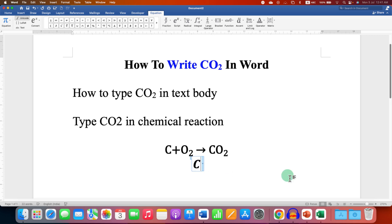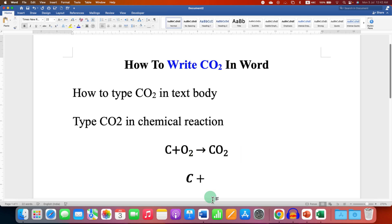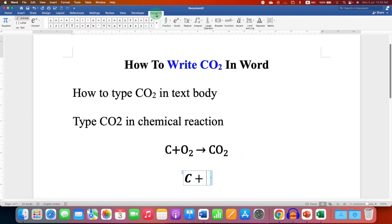Type, for example, carbon plus. Now to write the small O2, you need to click on the equation tab and under the script select the second option subscript. Now you will get two boxes. In the first box type O and 2 in the next box. For the arrow, you can just type backslash right arrow and space bar to get the arrow.